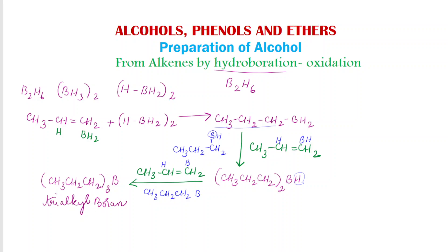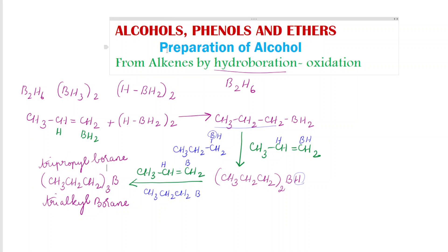This trialkylboron is the general name for the product. Since here boron is attached to three propyl parts, we get the product tri-propyl boron. The name of the product depends on what type of alkene we are treating with the diborane. This completes the hydroboration part — hydroboration is the reaction of alkene with diborane, where diborane adds to the alkene resulting in trialkyl boron.